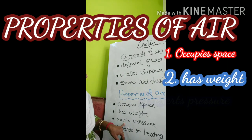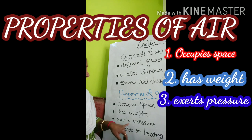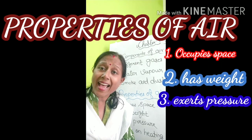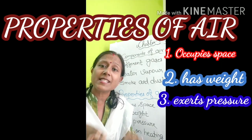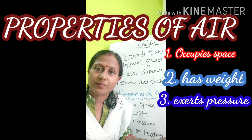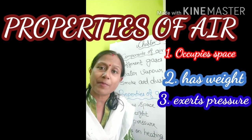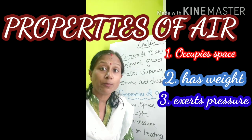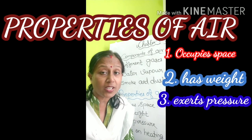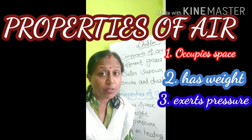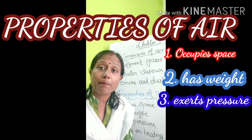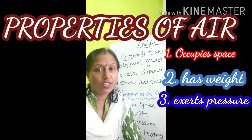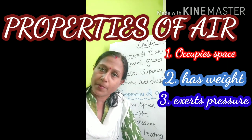The third property of air is that air exerts pressure. Air is present everywhere, and any weighty substance exerts pressure. The pressure exerted by air is known as atmospheric pressure. Atmospheric pressure is measured using a device called a barometer.